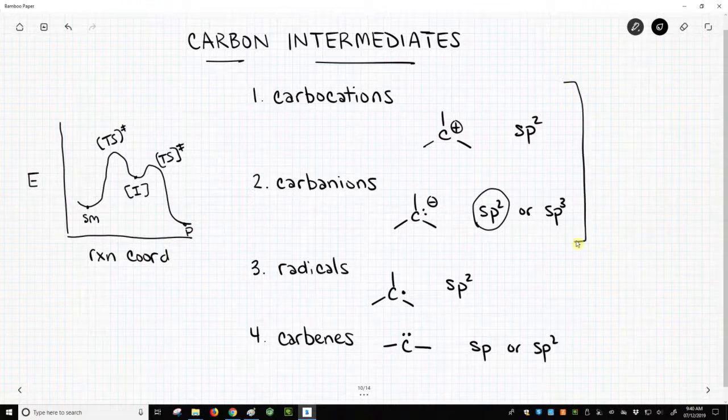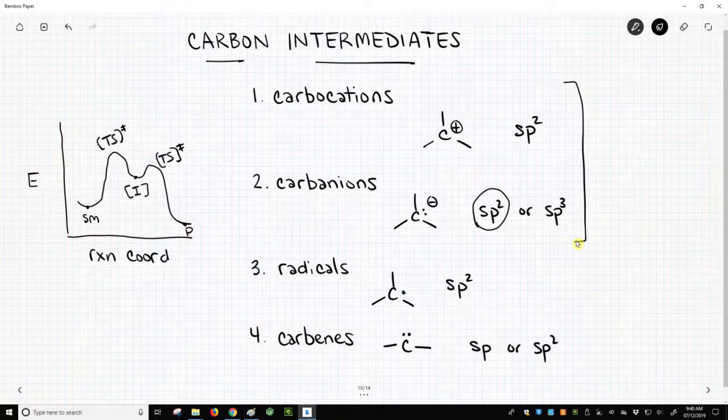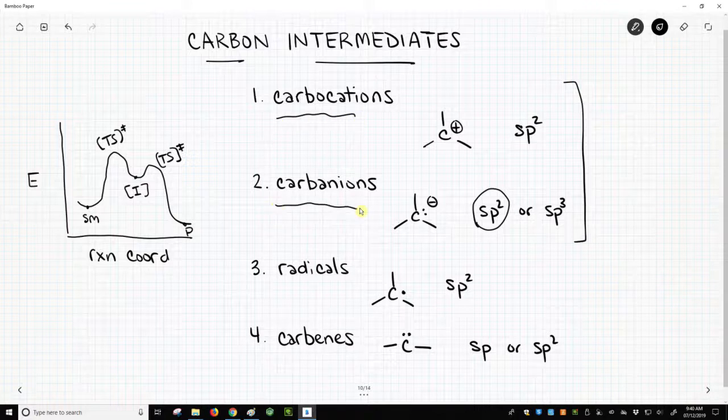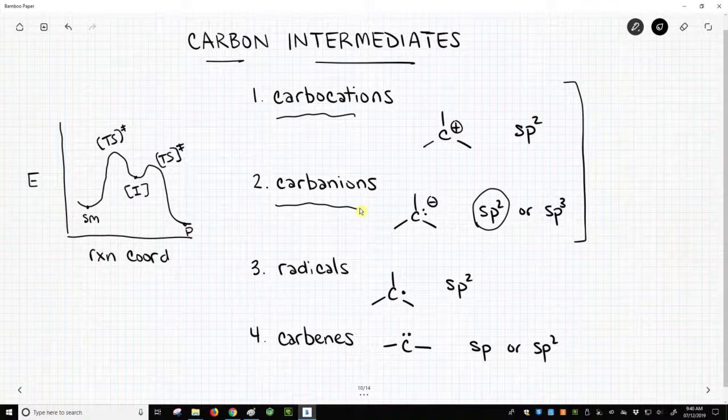I want to highlight that carbanions and carbocations are both charged intermediates, and so any discussions that we've had about how do we stabilize or handle charges in molecules are very important and are going to come to the forefront when we talk about carbocations or carbanions. So those are the four carbon intermediates that are encountered in organic chemistry.